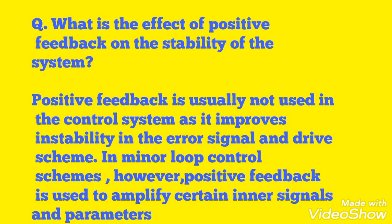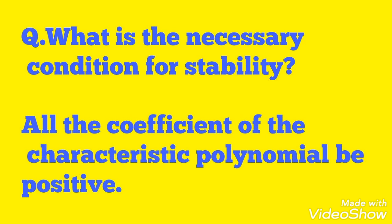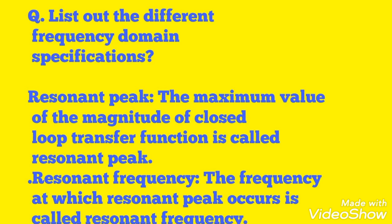What is the effect of positive feedback on stability? Positive feedback is usually not used in control systems as it increases instability in the error signal. However, in minor loop control schemes, positive feedback is used to amplify certain errors. The necessary condition for stability is that all coefficients of the characteristic polynomial must be positive.